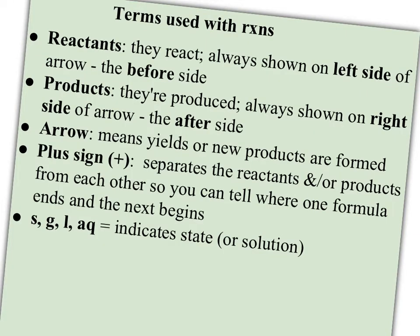Common terms that you need to know that are used with reactions are reactants and products. Reactants are the things that react. They're always shown on the left side because that's the before side. The reactants are the stuff you start with. They're going to combine and react and rearrange with each other to make some new stuff. The new stuff is called the products because they're produced. They're always shown on the right side of the arrow or the after side. The arrow separates the reactants and the products, and it means yields, or new products are formed. Chemists deliberately chose not to use an equal sign because your reactants don't equal your products. Even though you have to have an equal number of atoms on each side, same kind and same number, they're rearranged into new products, and those new products have different properties.